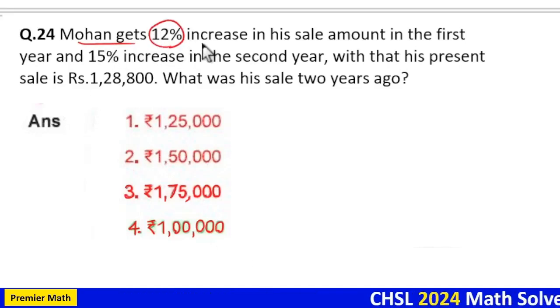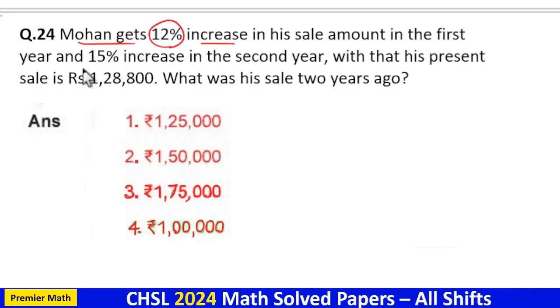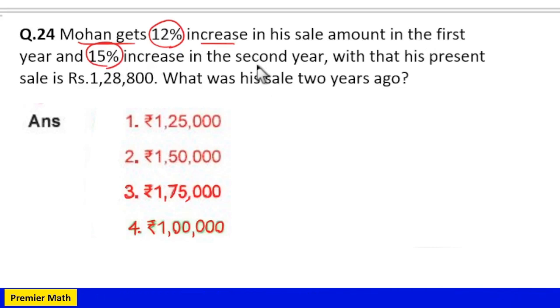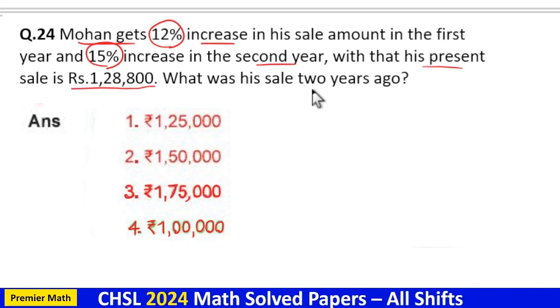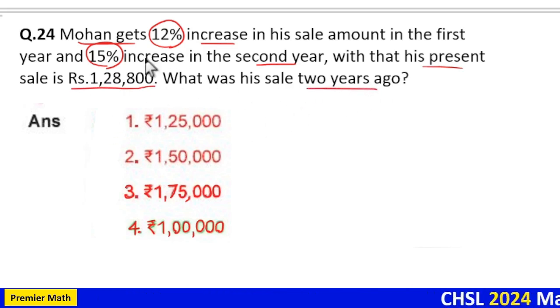Mohan gets 12 percentage increase in his sale amount in the first year and 15 percentage increase in the second year, with that his present sale is Rs 1,28,800. What was his sale two years ago? Here we can use the successive increment formula.